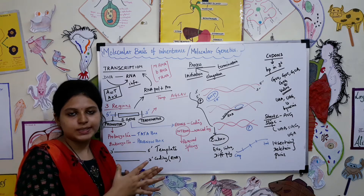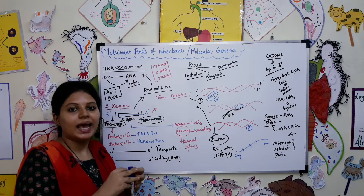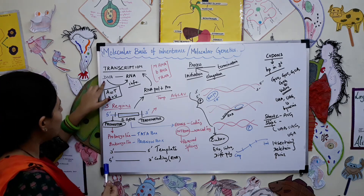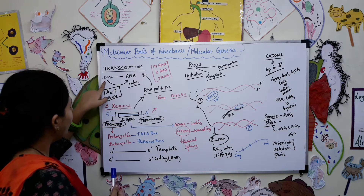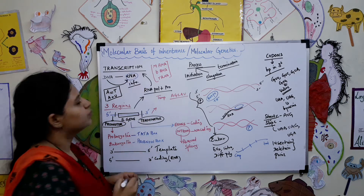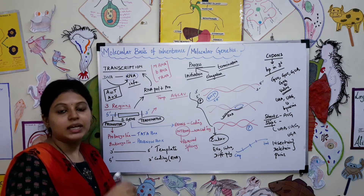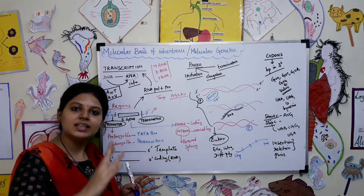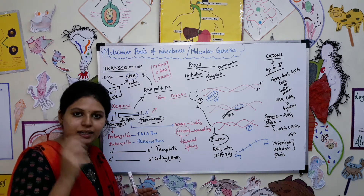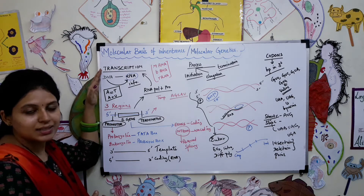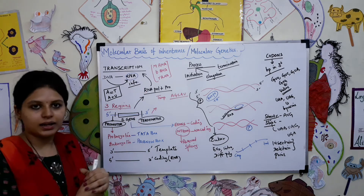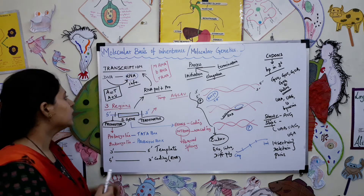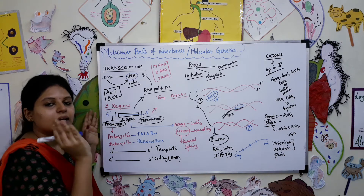We previously spoke about replication, and now we will talk about transcription. Transcription is nothing but the transfer of information from DNA to RNA. After DNA has finished replication, the base pairs in each of these strands will be coded by RNA. So transformation of information from DNA to RNA is called transcription.